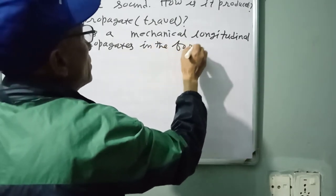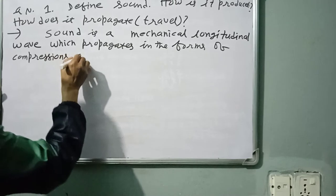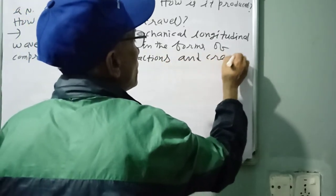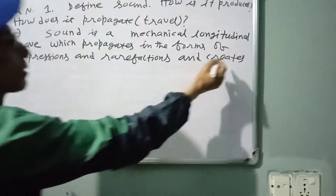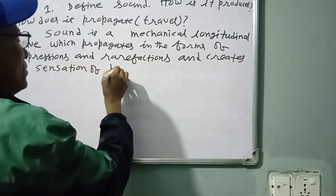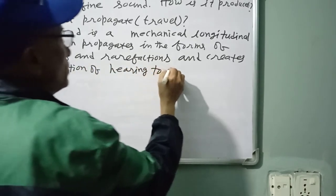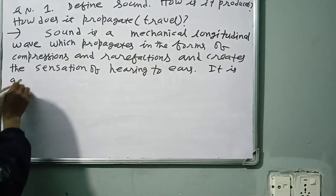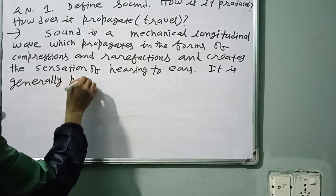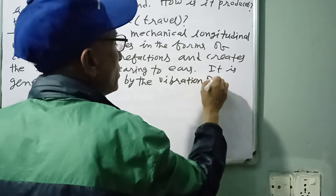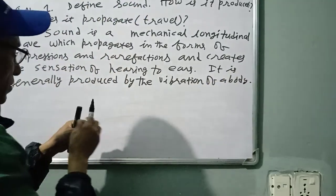Sound is a mechanical longitudinal wave which propagates in the forms of compressions and rarefactions and creates or gives the sensation of hearing to ears. That is the complete definition of sound. Now, how is it produced? It is generally produced by the vibration of a body.